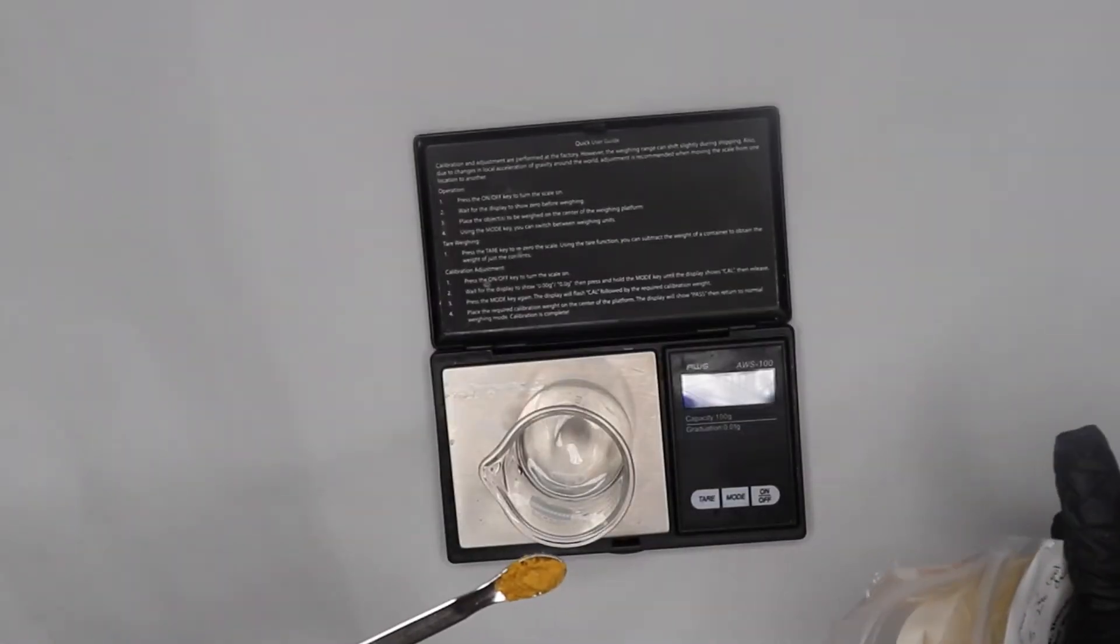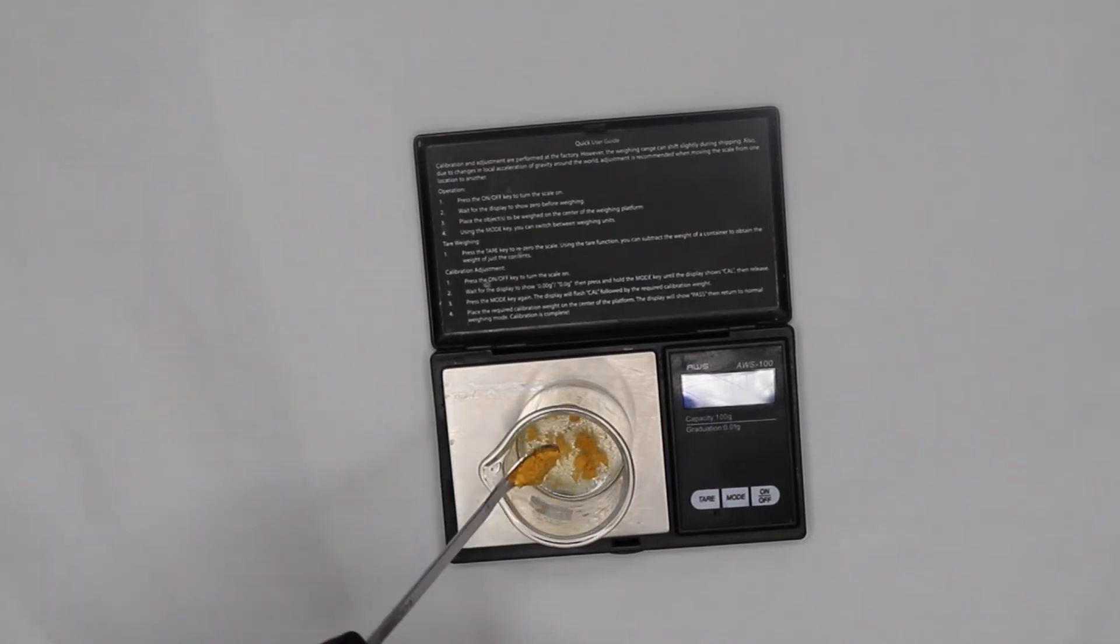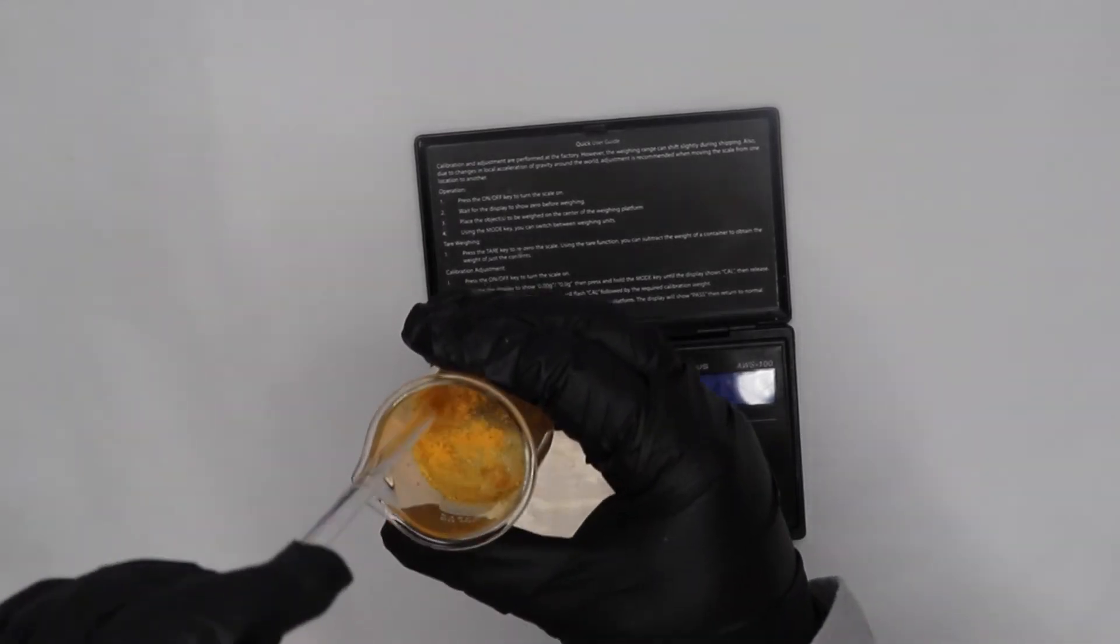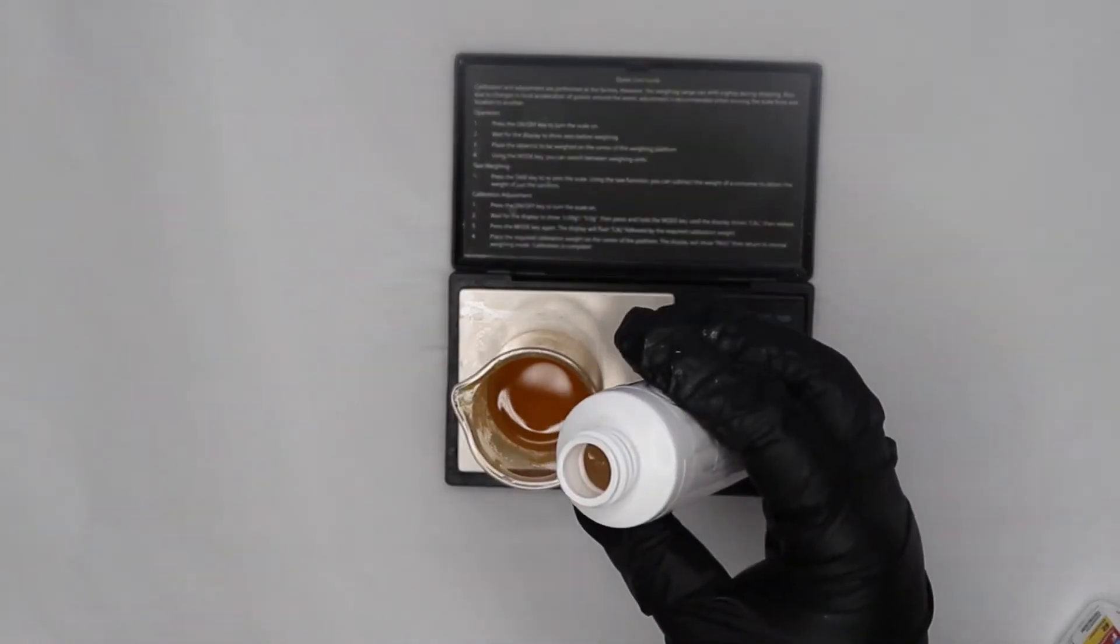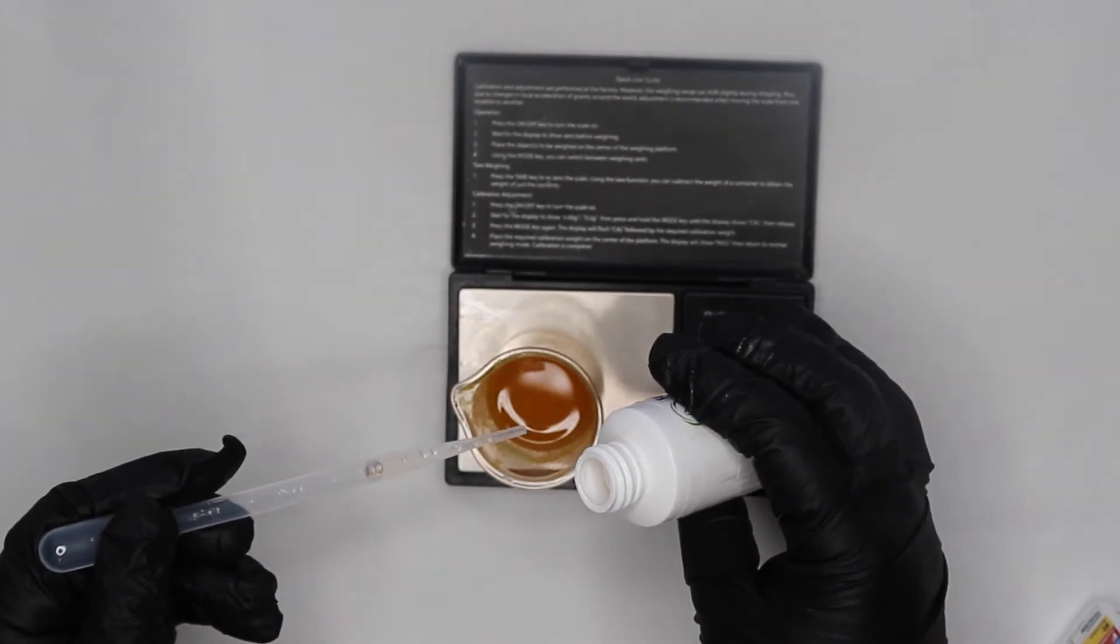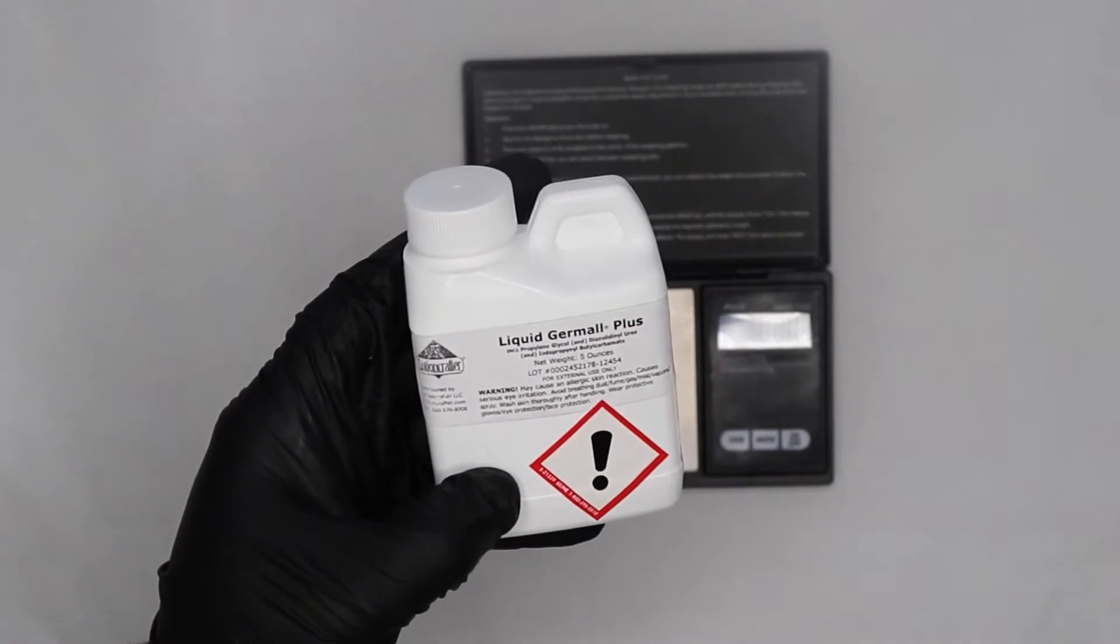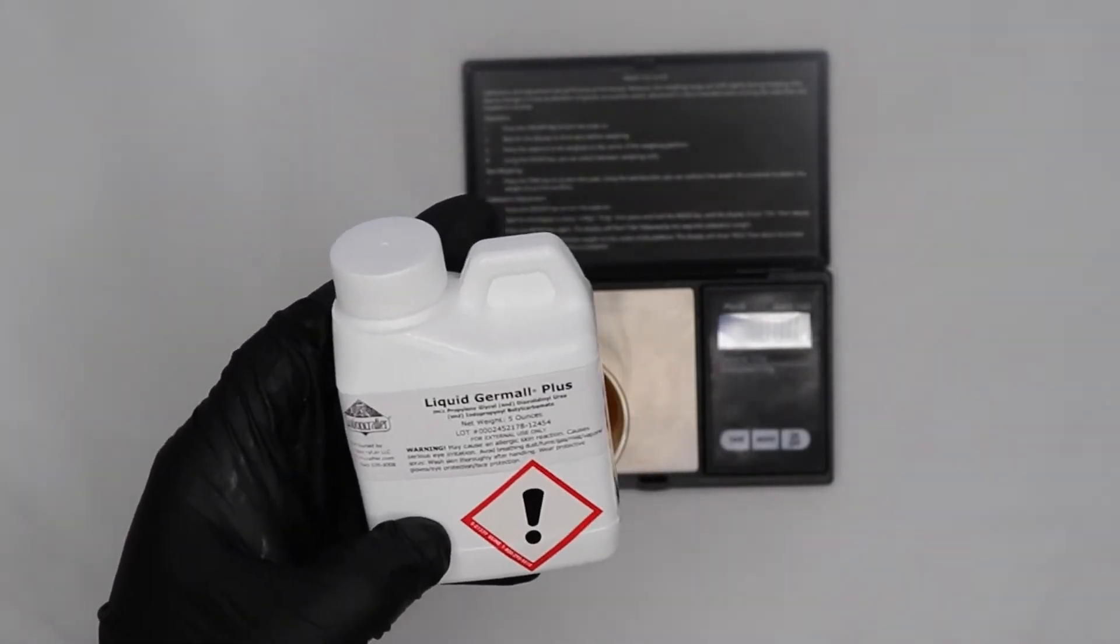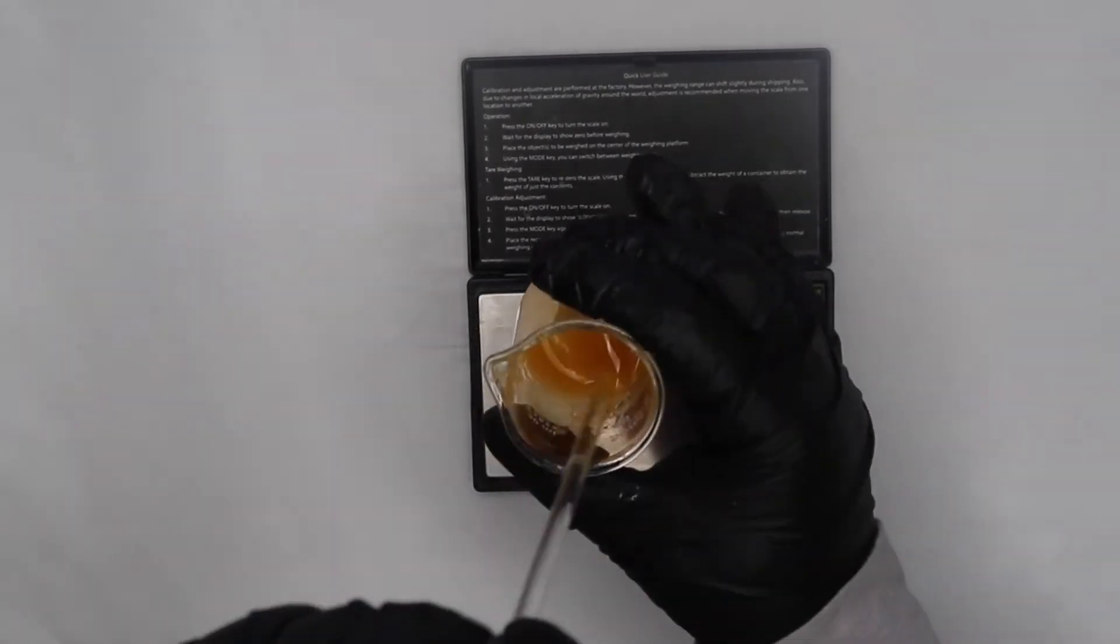0.6 grams of pumpkin powder. And go ahead and mix again. 1.8 grams of pumpkin enzyme. Okay and I did add 0.3 grams of liquid germoplus but my battery died. So we go ahead and mix.